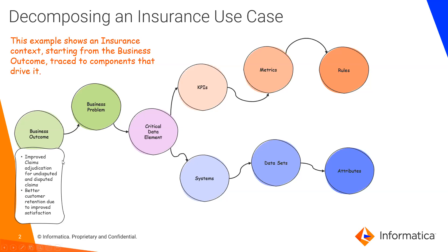So if we start with the business outcome, as a property casualty insurance company, you might be looking at something like improved claims adjudication and prioritization strategies for disputed and undisputed claims. This is the outcome we're looking at so that we can have better customer retention and keep people happy, but also process the data better and be more efficient.